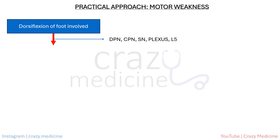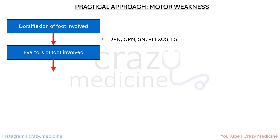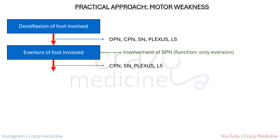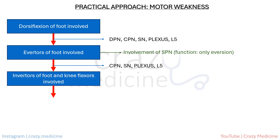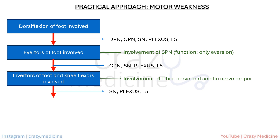Along with dorsiflexion weakness, if there is also weakness of foot eversion, this suggests involvement of the superficial peroneal nerve. At this stage, we can rule out isolated deep peroneal nerve involvement and move one step higher — removing the deep peroneal nerve from the list. Now, if foot inversion and knee flexion are also weak, this suggests involvement of the tibial nerve and sciatic nerve proper, which eliminates the common peroneal nerve as a potential cause, further narrowing our focus.